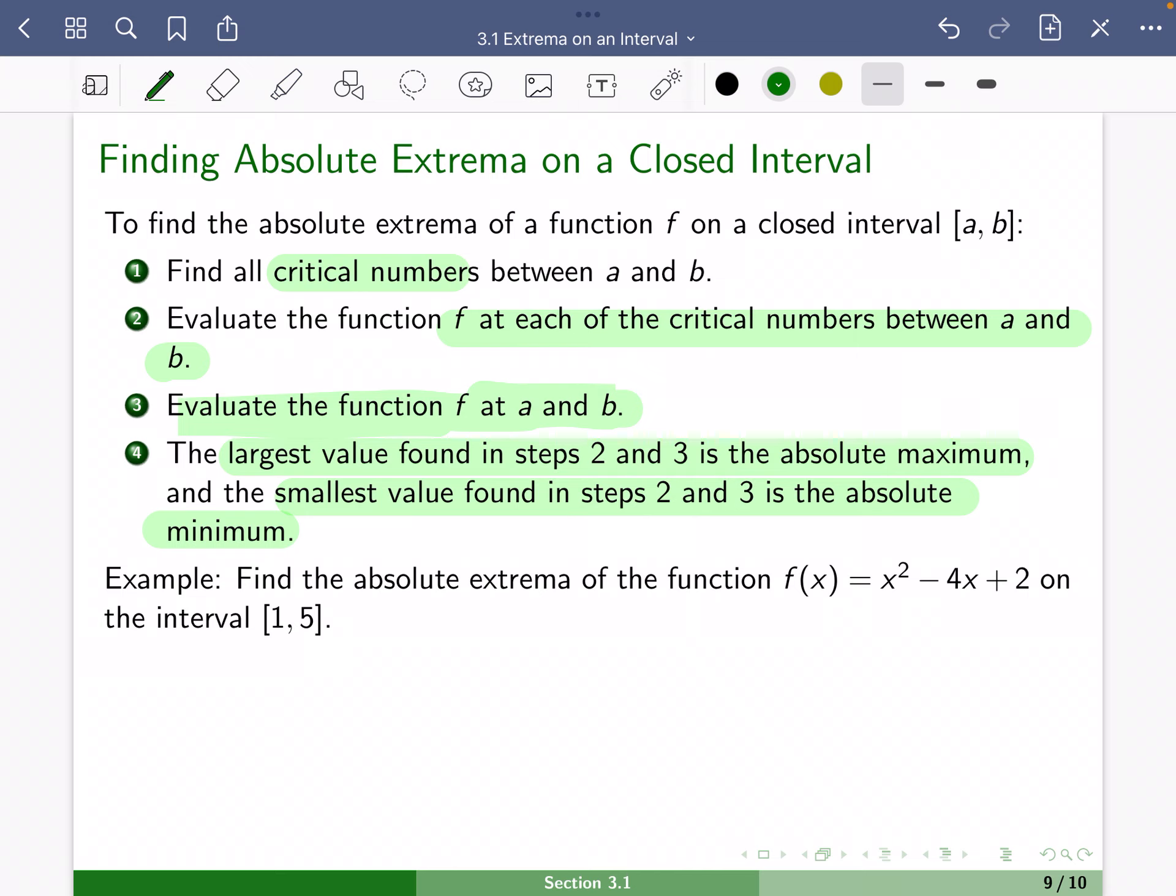So let's look at this example here. f(x) is x² - 4x + 2 on this interval from 1 to 5. We need to find critical numbers. So our derivative, 2x - 4. Set that derivative equal to 0. We get x is equal to 2.